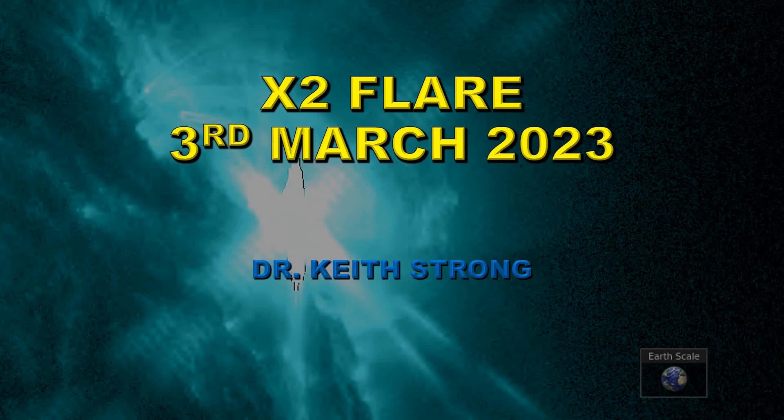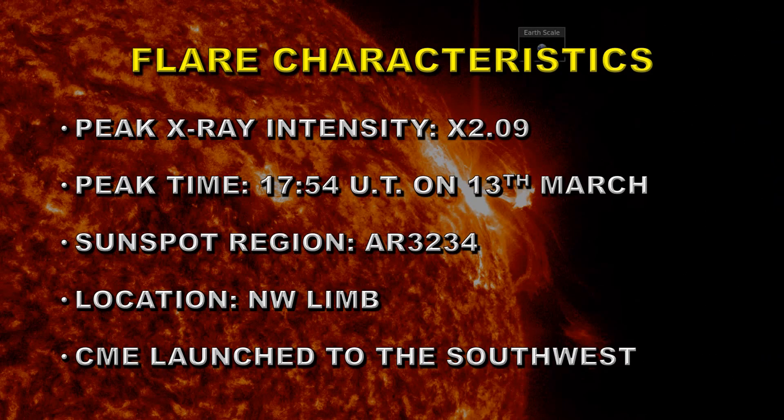Welcome. The breaking news today is the Sun just produced an X2 flare. The peak intensity was X2.09, so technically it was a 2.1 flare. Its peak time was at 1754 UT on the 13th of March. It was from sunspot region 3234, which was on the northwest limb at the time.